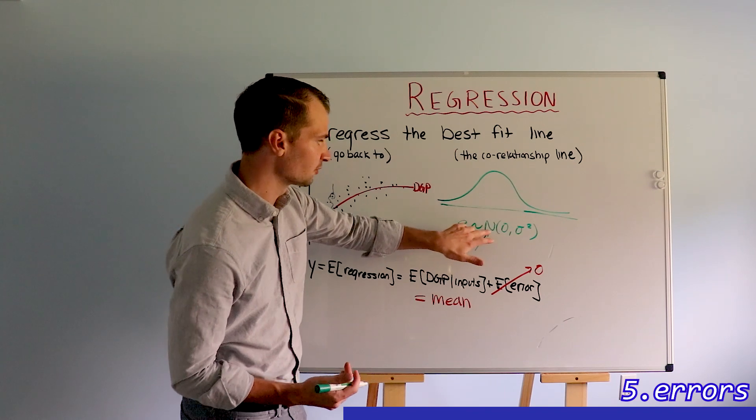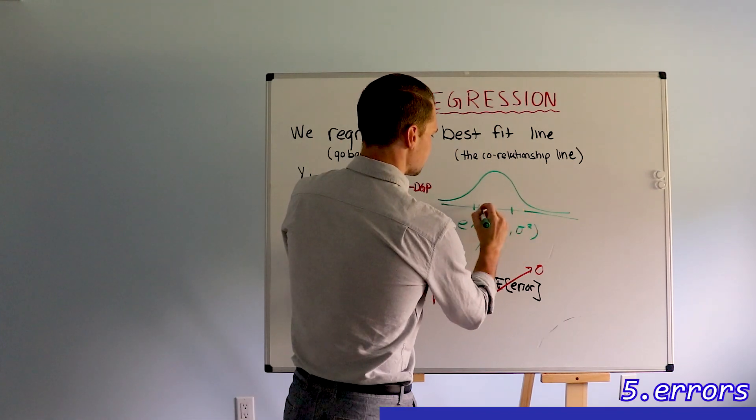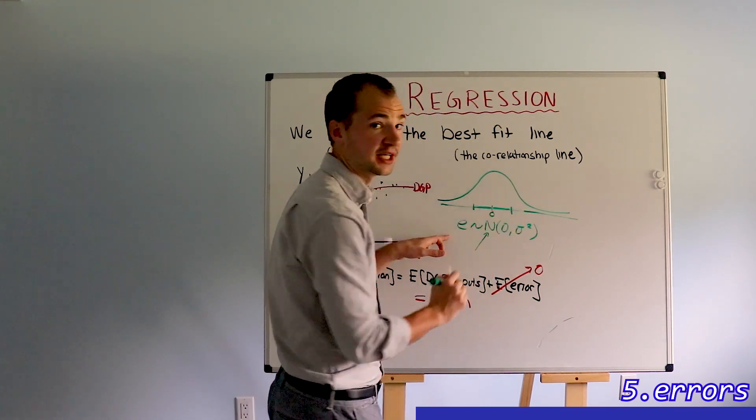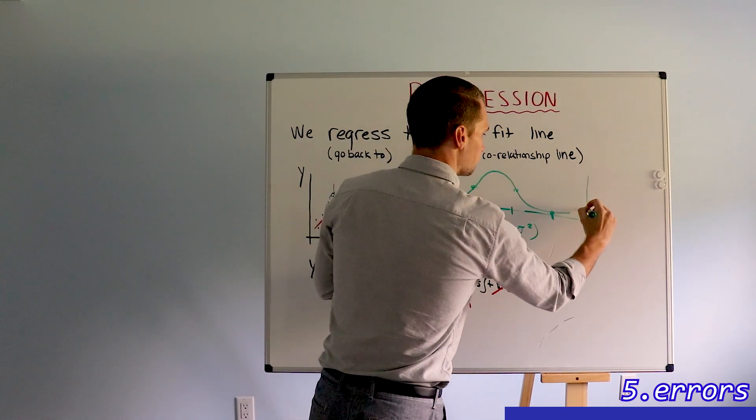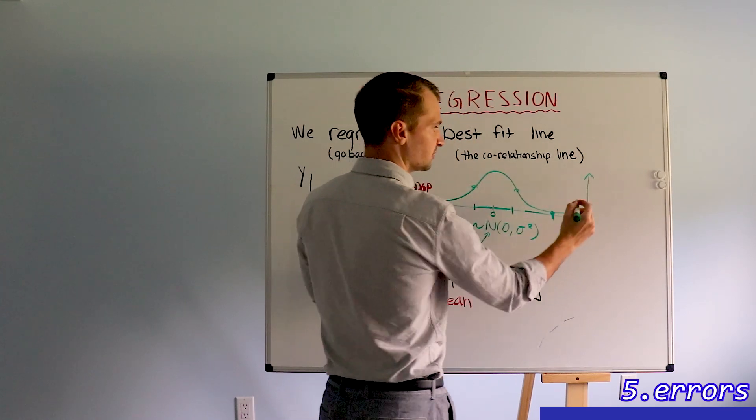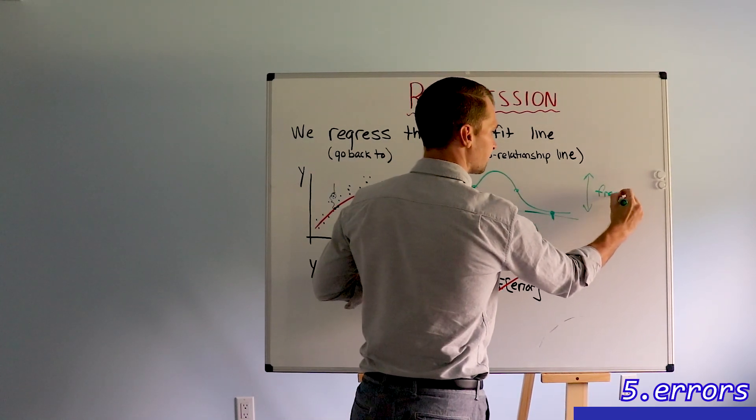So what does it mean to be normal? Smaller errors, say within one standard deviation, occur more frequently than larger errors. And we remember to interpret the normal distribution as frequency going vertically.